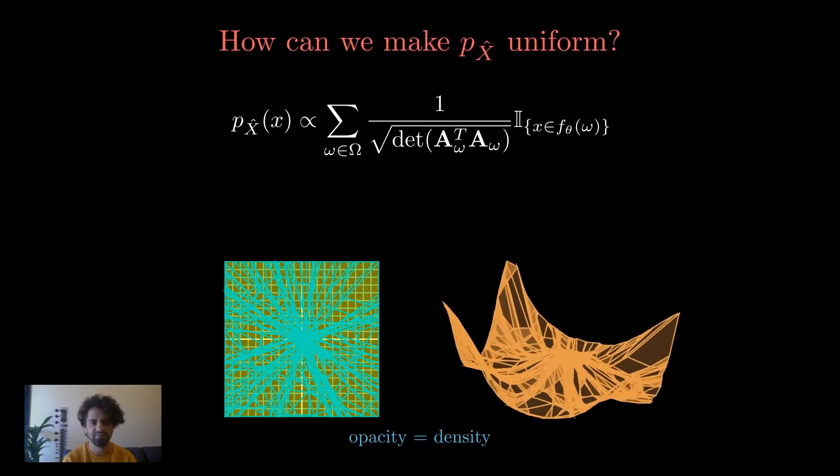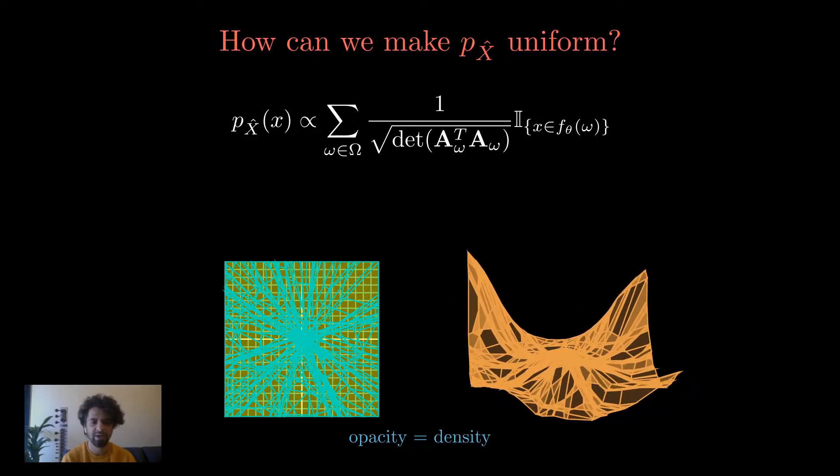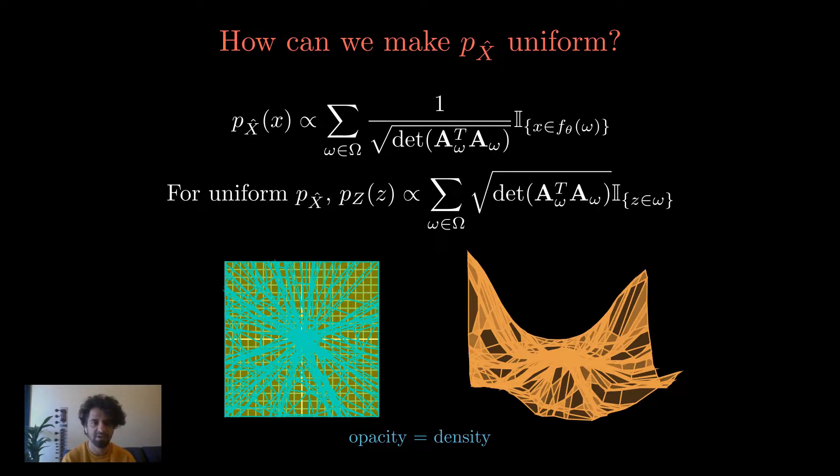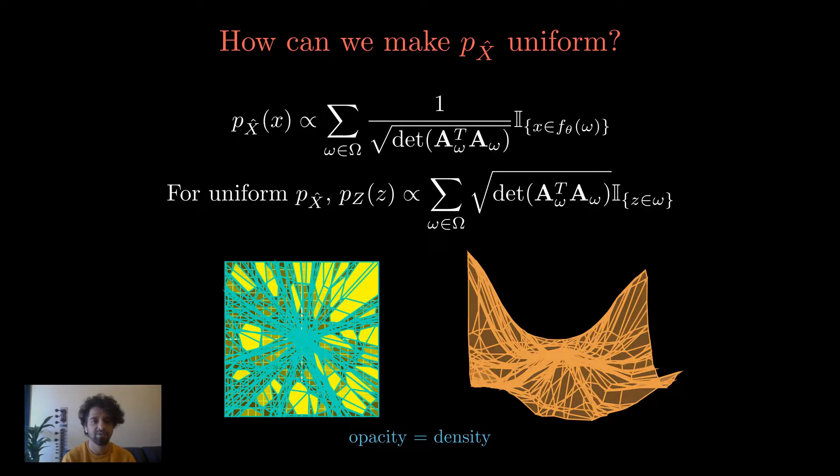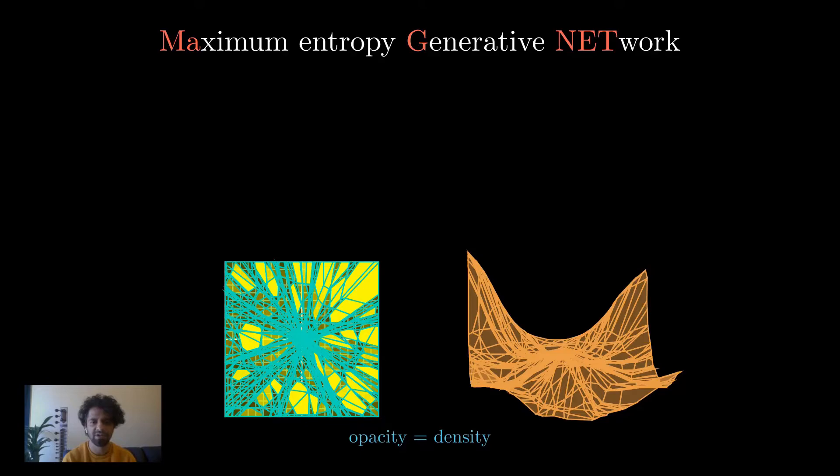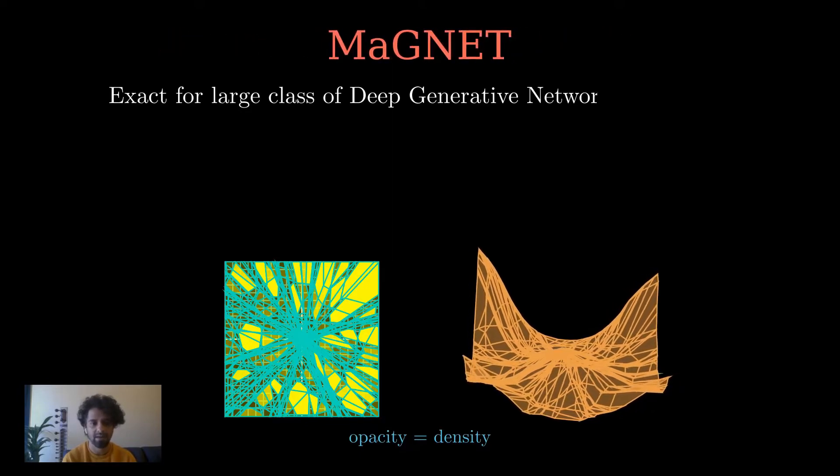So let's ask ourselves what is the p_z that would make p_x uniform? We can also derive such an expression which gives us a method to sample uniformly from the learned manifold of any pre-trained deep generative network. We call this method maximum entropy generative network sampling or MAGNET in short.